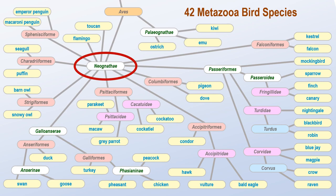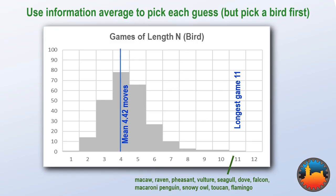If we pick a bird first, then we can reduce the longest game by one move. So let's pick a bird first. Well, this does reduce the longest game to 11 guesses, but it increases the average game length. Is it worth it?